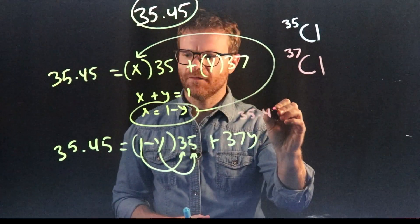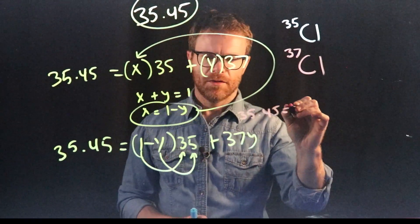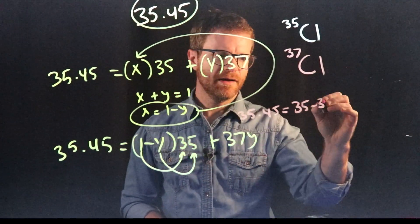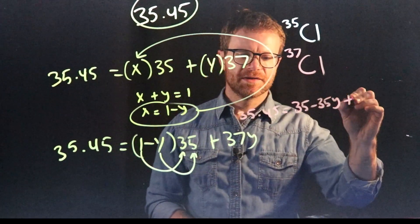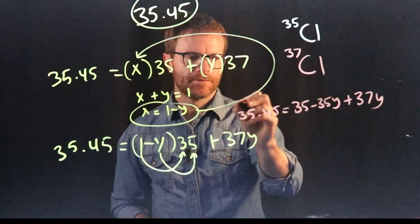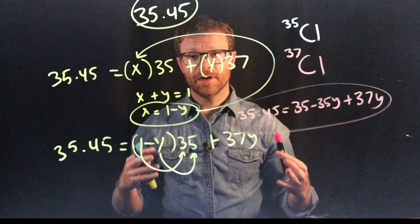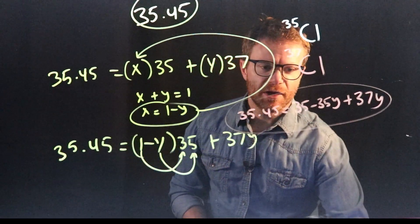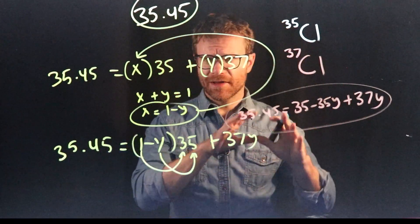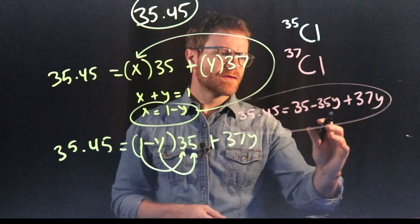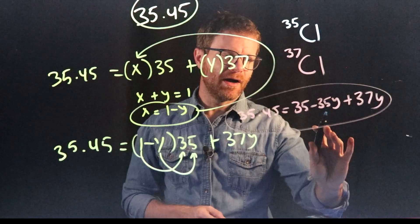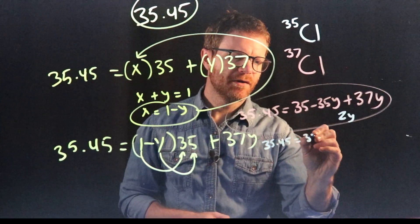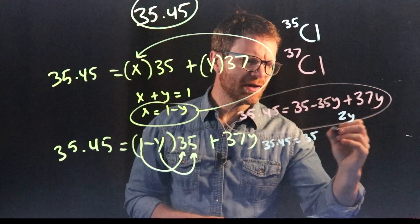That's 35.45 equals 35, right? 1 times 35 is 35, minus 35Y plus 37Y. That's our new written out equation. Now let's just kind of do our normal basic algebra stuff and try and get our variables on one side of the equation, get everything stacked together so we can solve for Y. So 37Y minus 35Y is just 2Y. That's easy. So now we have 35.45 equals 35 plus 2Y.